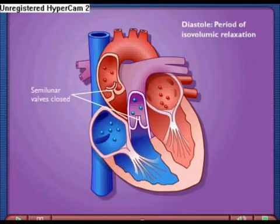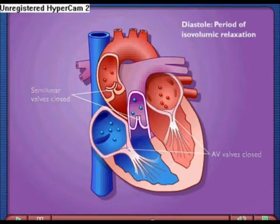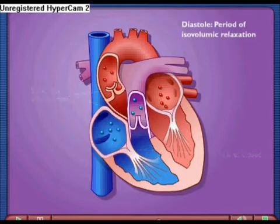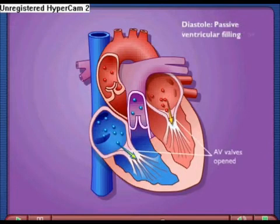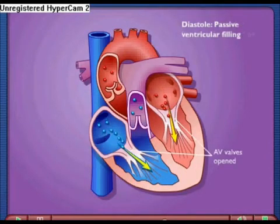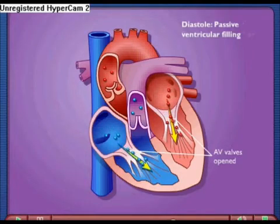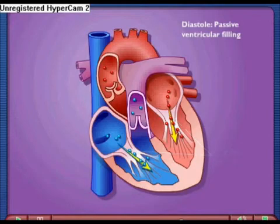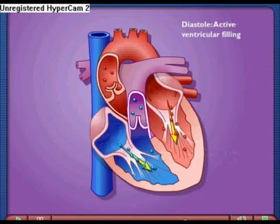Blood flows passively from the pulmonary veins to the left atrium. The left atrium has a low pressure because it's in diastole and lets the majority of the blood pass through the left atrioventricular valve and into the left ventricle. The left atrium increases in pressure during atrial systole to push the remaining blood from the atrium into the ventricle. The atrium then returns to diastole and the atrioventricular valve closes.